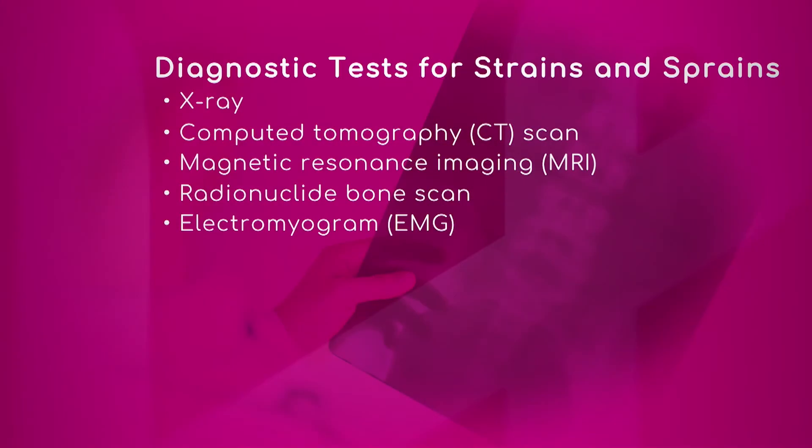The second test is the MRI — magnetic resonance imaging. It's a great test; there's no radiation involved. It shows all the soft tissue, so it can show a tear in a muscle, and it can show a disc herniation where the disc actually protrudes backwards and presses on the nerve.